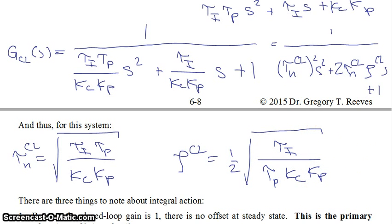And so those would be our two second order parameters that arise from adding integral control to a first order process.